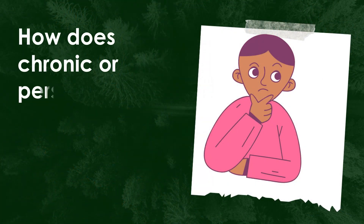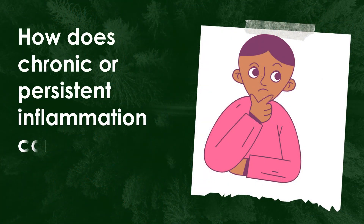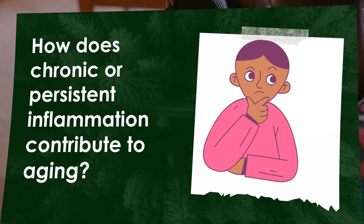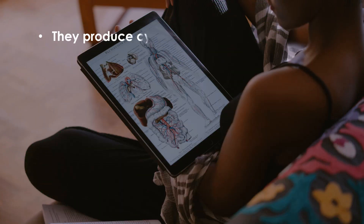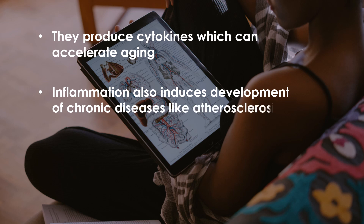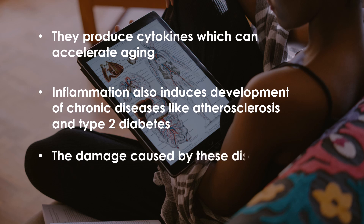How does chronic or persistent inflammation contribute to aging? Persistent or chronic inflammation produces cytokines which can accelerate aging. Inflammation also induces development of chronic diseases like atherosclerosis and type 2 diabetes, and the damage caused by these diseases further accelerates aging.